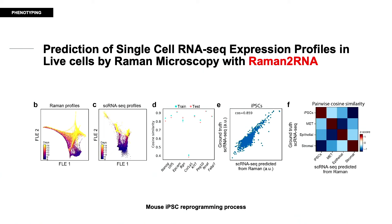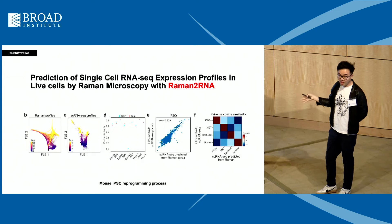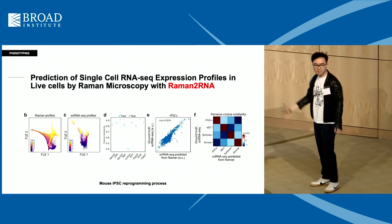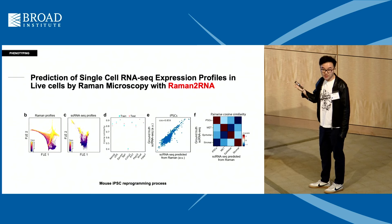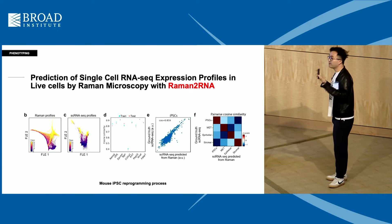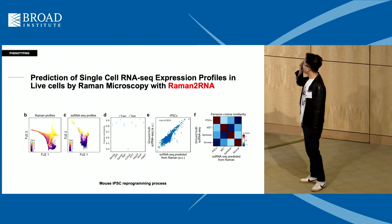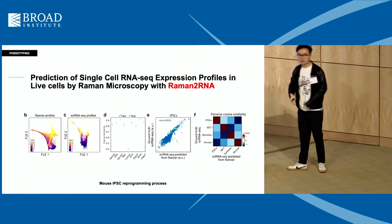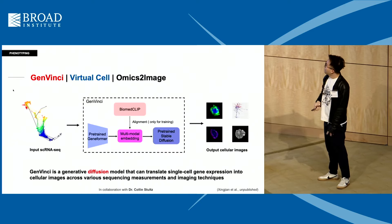Let me show some Raman-to-RNA results. The first plot is a force-directed layout embedding of the Raman data; the second is a force-directed layout of the single-cell RNA-seq data—they share similar shapes. We show the predicted gene expression versus ground truth, and the generated single-cell RNA-seq data versus ground truth, which look very similar. The last figure shows pairwise cosine similarity comparisons between the generated and ground-truth scRNA-seq data. This is our first demonstration of generating expensive scRNA-seq from low-cost, non-destructive measurement.